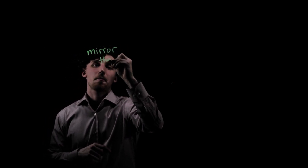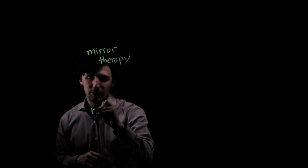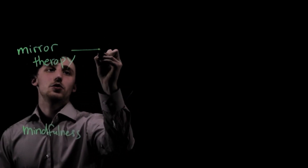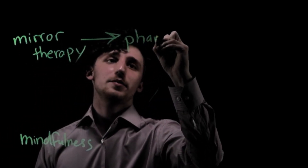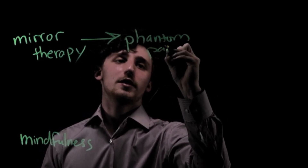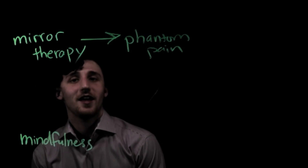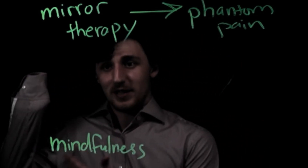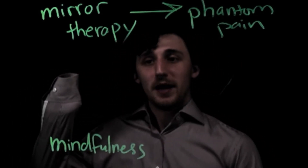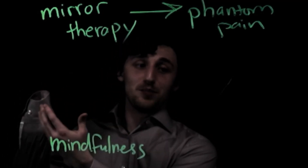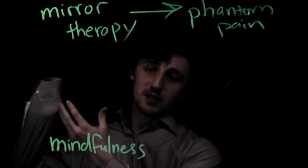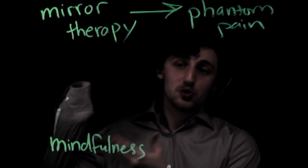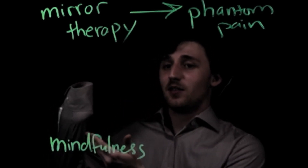Two examples of neuroplasticity are mirror therapy and mindfulness. Mirror therapy is used to treat phantom pain, which occurs when someone is missing a limb — say, their left hand. They may still feel sensations like itching in that missing hand, and in extreme cases they feel pain. The challenge is: how do you treat pain in a hand that isn't there?